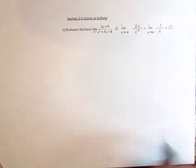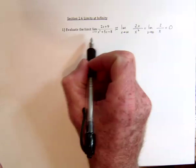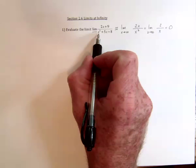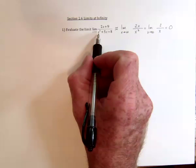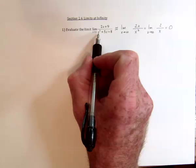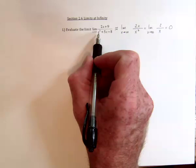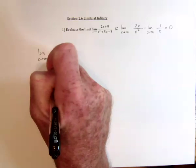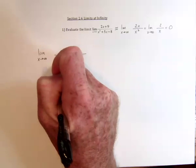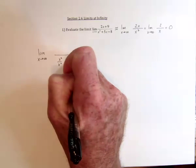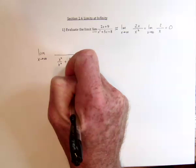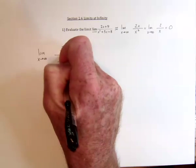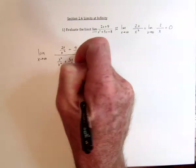Here's another way, and some people like to do this. Whatever the highest degree term is out of all of the terms, take that and divide all of the terms by it. So we'd have the limit as x approaches infinity, and then x squared gets divided by x squared, the 5x gets divided by x squared, 8 gets divided by x squared, 2x divided by x squared, and 9 divided by x squared.